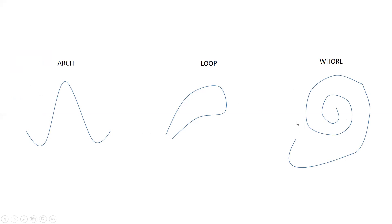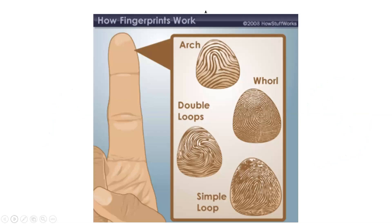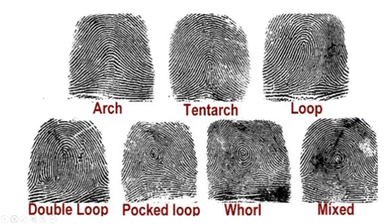The arch is the least common and the loop is the most common. Now we're going to take a look at fingerprints. Sometimes students get a little confused when they look at all the lines, but if you remember the general pattern of these fingerprints it will help you. We do see the arch in the center of this print, we see the whorl turning upon itself, and then we see the simple loop.